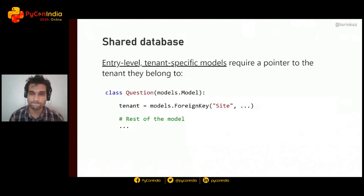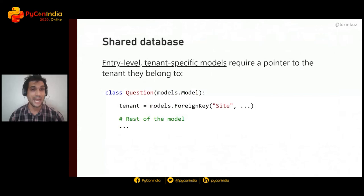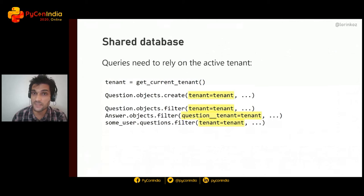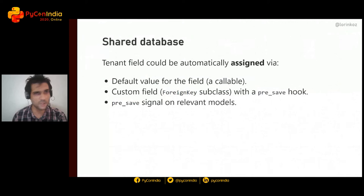The shared database approach has records mixed and identified by a tenant column. Entry-level tenant-specific models require a pointer to the tenant they belong to. You don't have to annotate every model — only entry-level ones, as long as you can reach the tenant through a reasonable number of joins. You'll need to pass the tenant specifically in all your queries for creating objects and filtering.